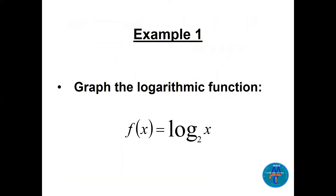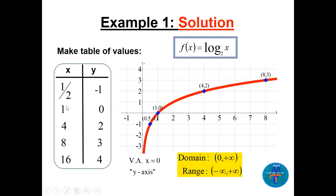Example one: graph the logarithmic function log base 2 of x. Since this is a new function, we take some easy points. For x = 4, we get 2² = 4, so log base 2 of 4 = 2. For x = 1, log base 2 of 1 = 0. The graph passes through (1, 0), has a vertical asymptote at x = 0 (the y-axis), domain from 0 to infinity, and range of all real numbers.